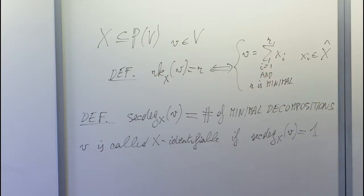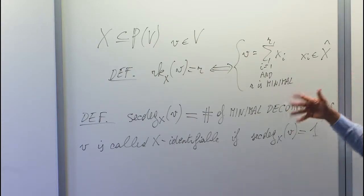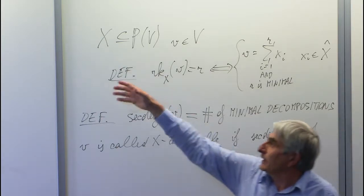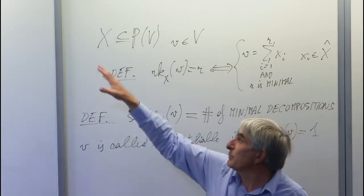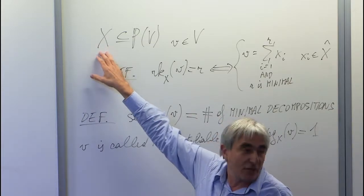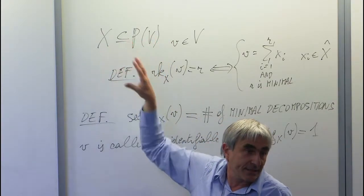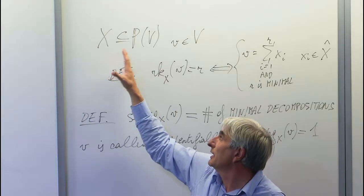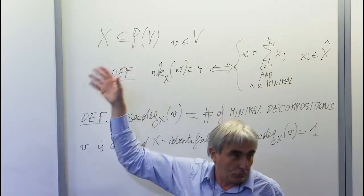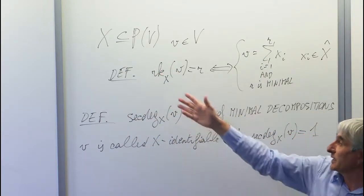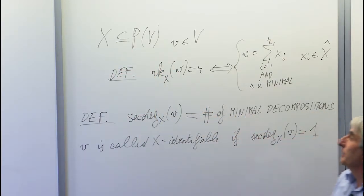This has a lot of striking applications. In tensor decomposition, like in the talk this morning, X is just the Segre variety. In the classical Segre embedding — and also partial or total symmetrization when you have the Veronese — these are quite commonly used, and sometimes they yield very interesting objects.